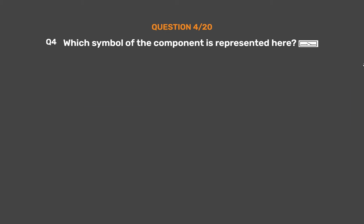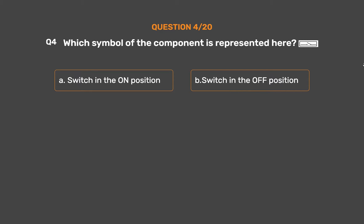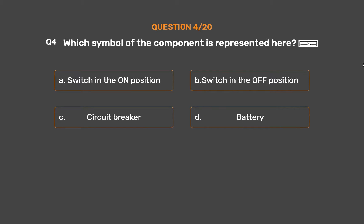Question number 4. Which symbol of the component is represented here? Option A: Switch in the on position. Option B: Switch in the off position. Option C: Circuit breaker. Option D: Battery.